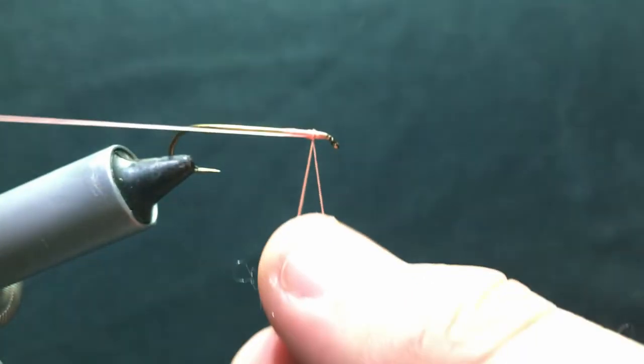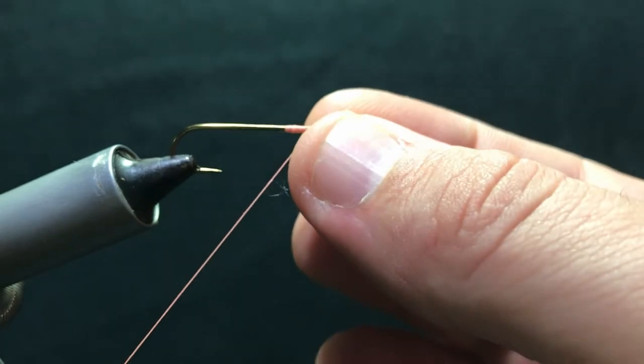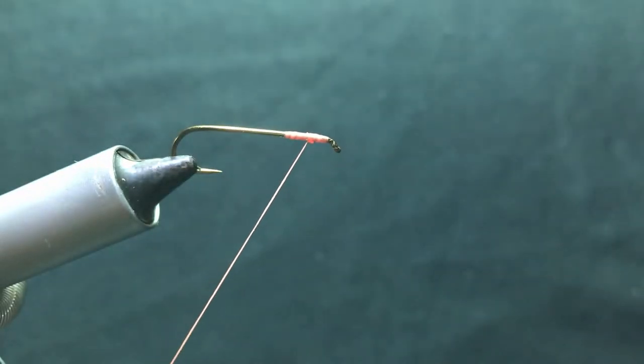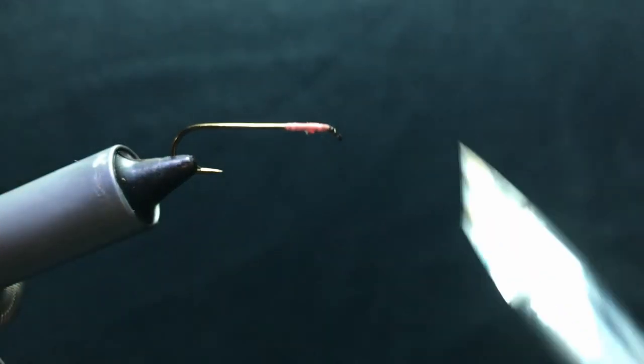Tip number two, at the end of your knot, don't clip the thread extremely close to the knot. Leave a little bit of a tag end. If you clip it too close, the knot could come undone, and the fly will be ruined.